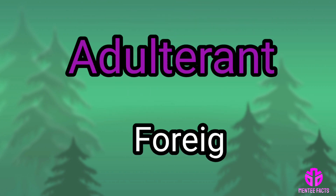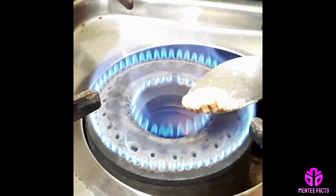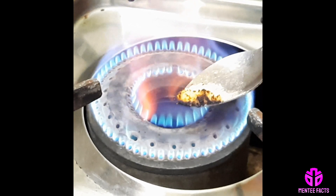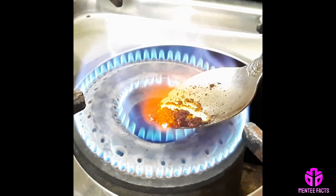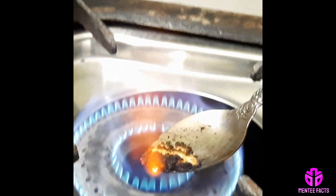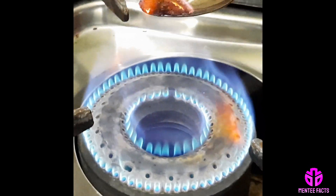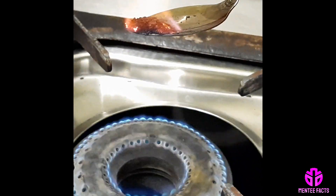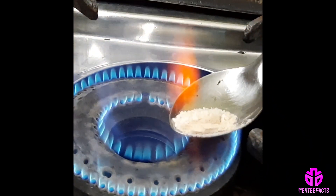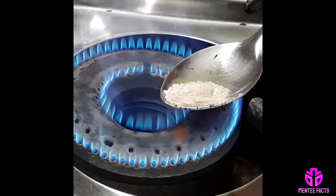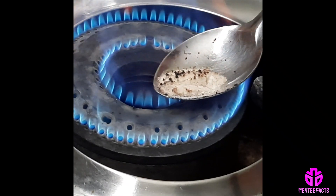A common adulterant in asafoetida is foreign resin. Burn a small quantity of asafoetida in a stainless steel spoon. Pure asafoetida burns like camphor with a bright flame. Adulterated asafoetida does not produce a bright flame like camphor because it contains foreign resin.